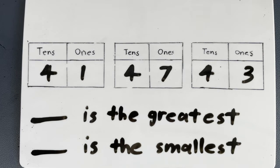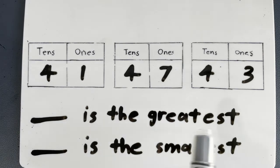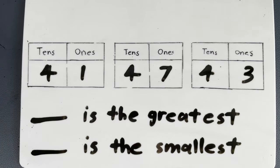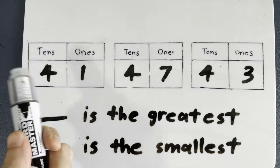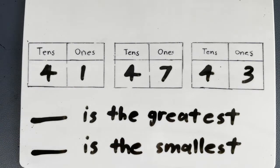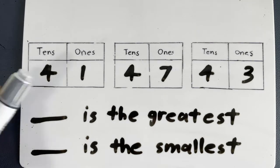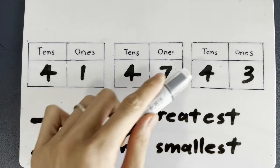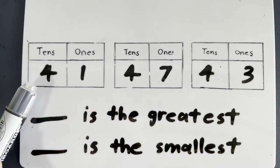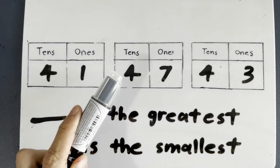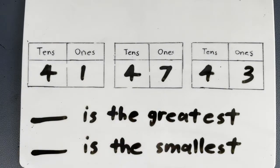Now we have three numbers again — 41, 47, 43. Tell me which number is the greatest. So once again, look at the tens. Which is the greatest? Oh no! All of them are the same — 4 tens, 4 tens, 4 tens.